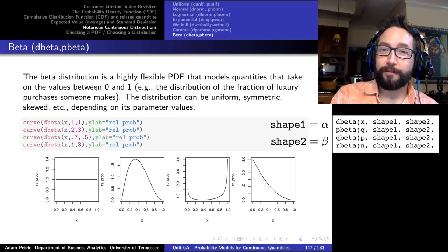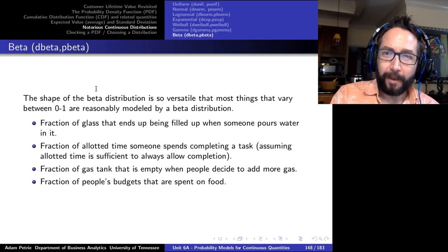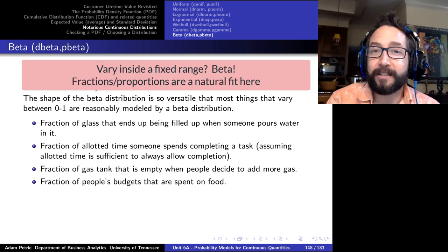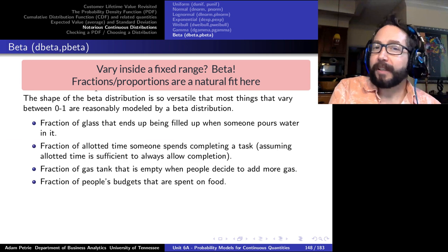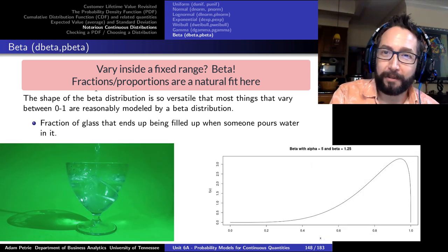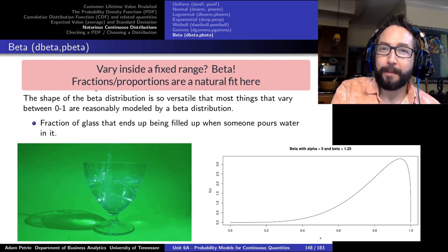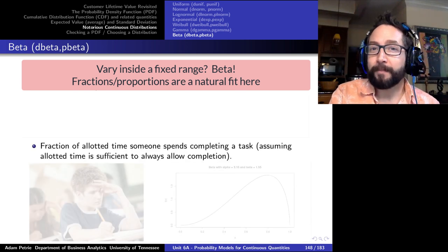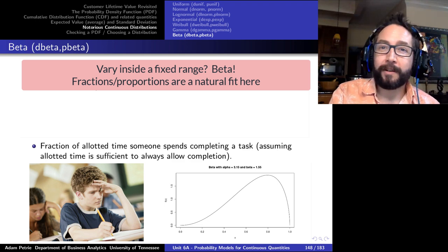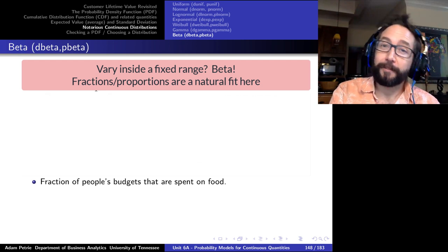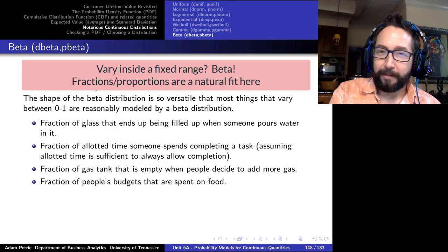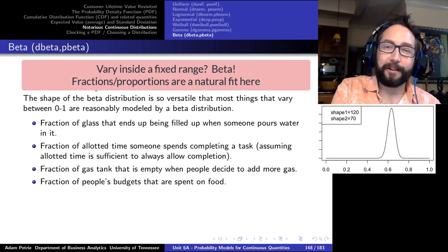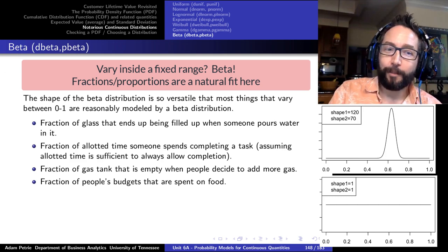R knows the beta distribution by the abbreviation 'beta', so dbeta plots the PDF and pbeta answers probabilities. We use it for any quantity constrained within a range. Examples: the fraction of a glass filled when a waiter pours water — between 0 and 1, beta distribution is a good model. The fraction of time someone uses when completing a task, or the fraction of a budget spent on food versus other quantities — somewhere between 0 and 1, we can probably find a beta distribution to fit that well. The beta distribution is that flexible.